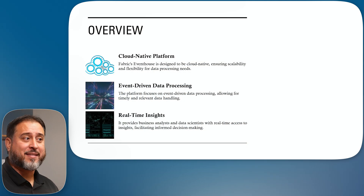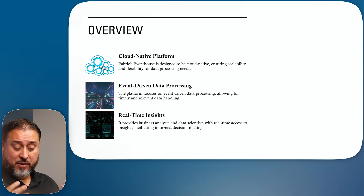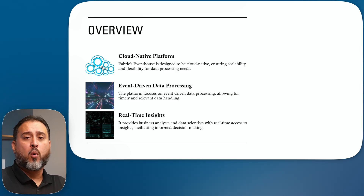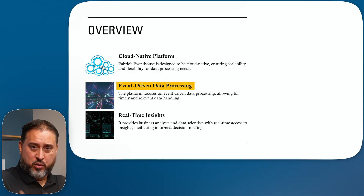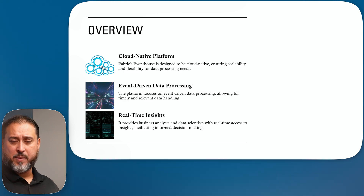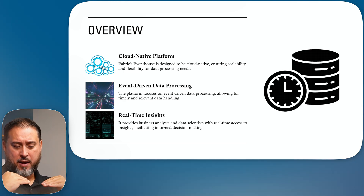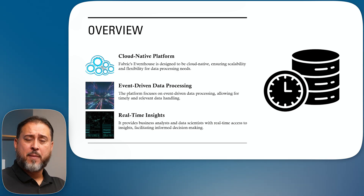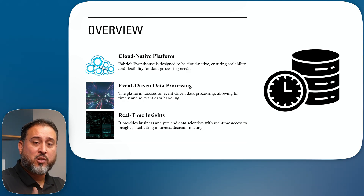When we look at real-time intelligence and the idea of an event house within the grand scheme of Fabric, this gives us a way to focus primarily on what's called event-driven or data in motion — real-time data. Comparing it to traditional relational database structures, sometimes referred to as time-oriented or schedule-based updates and refreshes, more transactional and OLAP scenarios — here we're talking about streaming data, data in motion.